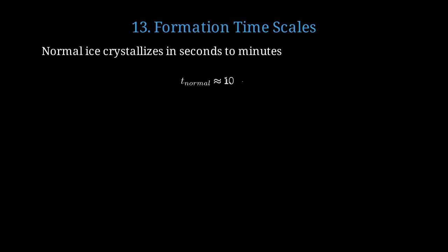The timescales for forming these exotic ices are fascinating. Normal ice takes seconds to minutes to crystallize from liquid water in your freezer. The formation time for normal ice is typically 10 to 100 seconds. But superionic ice forms in just microseconds when subjected to shockwave compression. The formation time is 1 to 10 microseconds, which is a millionth of a second.